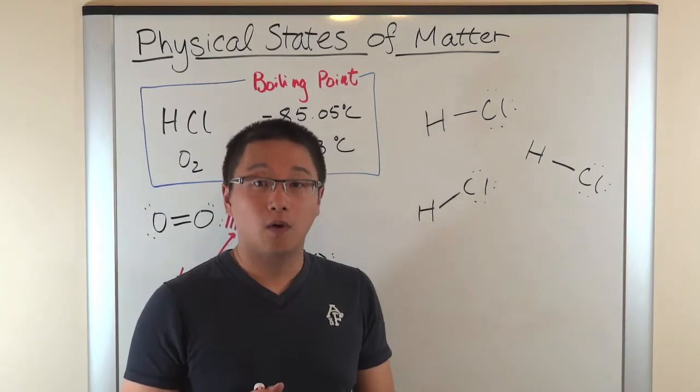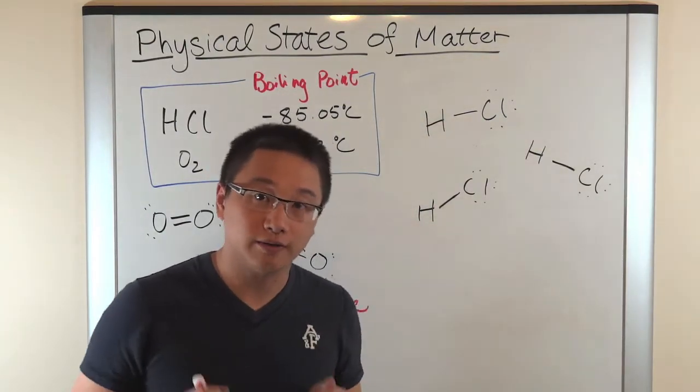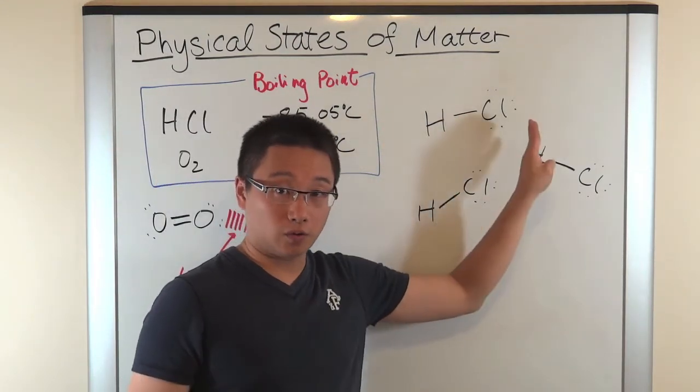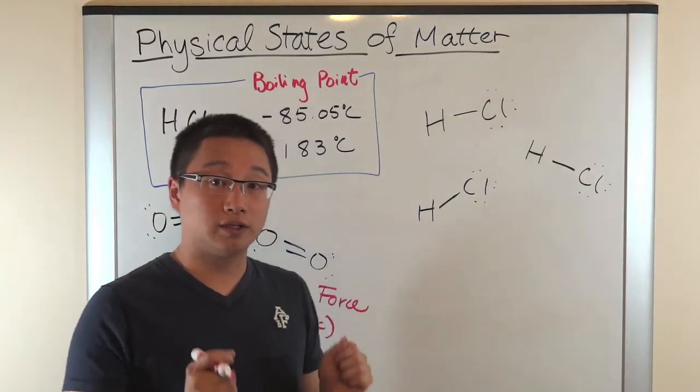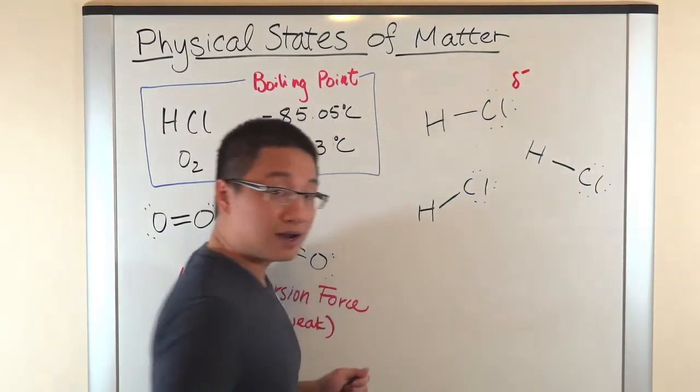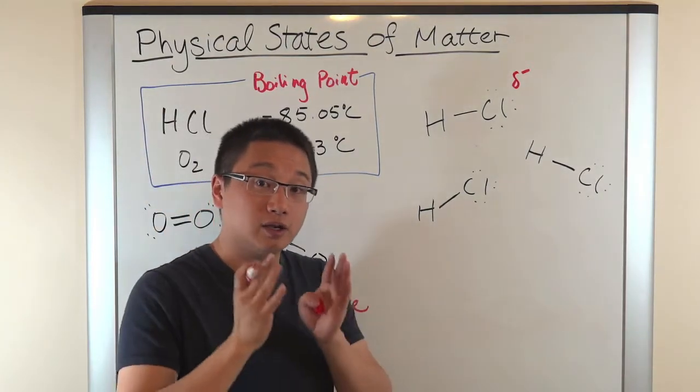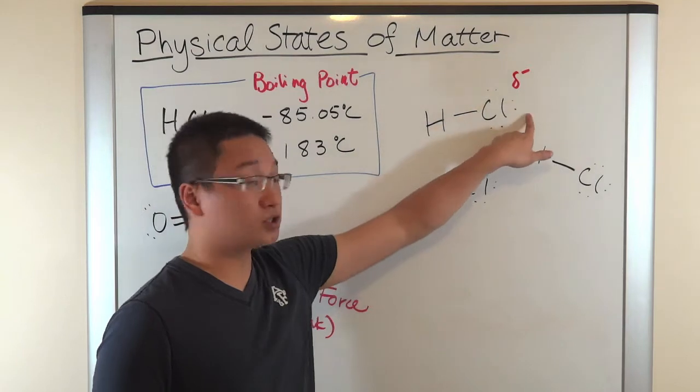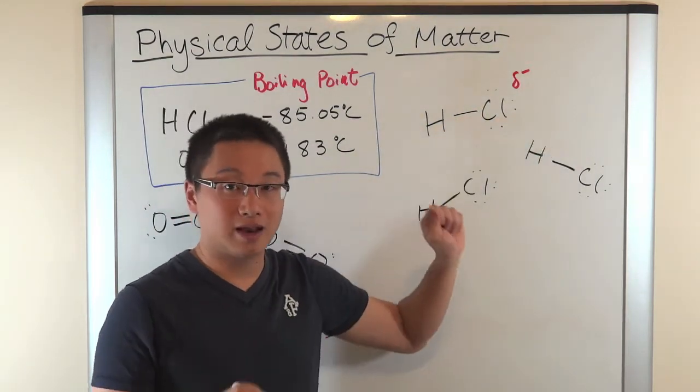Now, why is it important to understand this? Because when the electron from the hydrogen is leaning toward the chlorine, it makes the chlorine slightly more negative. Because now, it has a little bit more electron, making this end of the molecule a little bit negative.